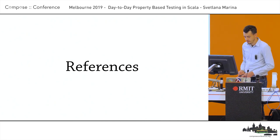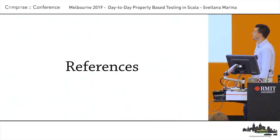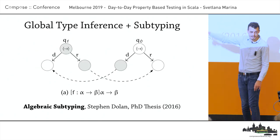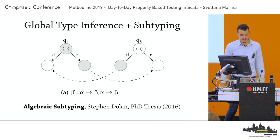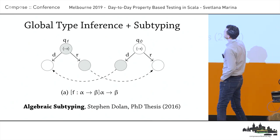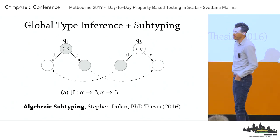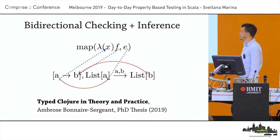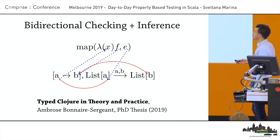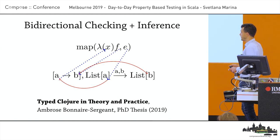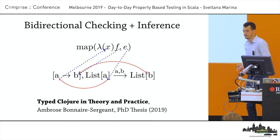The talk's wrapping up. References: if you're interested in diagrams combining global type inference and subtyping, check out Stephen Dolan's PhD thesis on MLSub, called 'Algebraic Subtyping.' If you're interested in combining bidirectional checking and symbolic execution, I have some written up in my recent PhD thesis — and that's ongoing work as well.